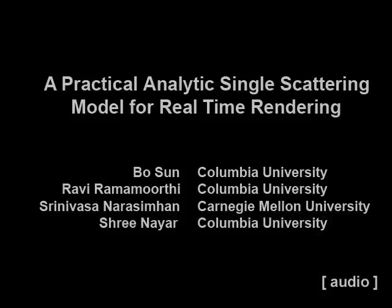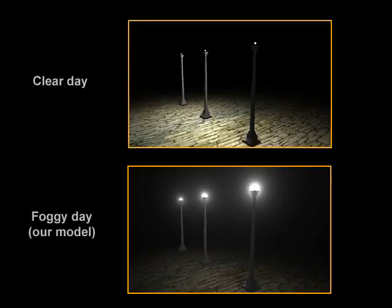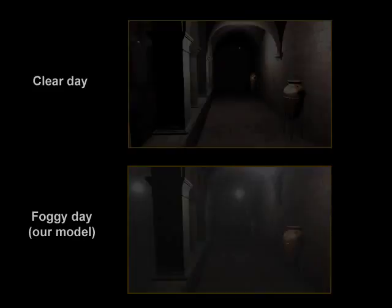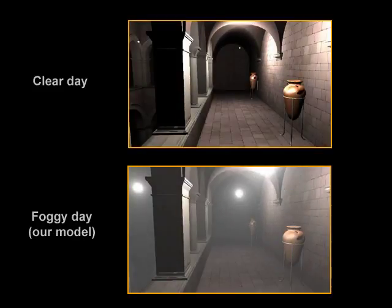In this paper we present a practical method for real-time rendering of scattering effects in participating media. Our model is based on a new explicit compact formula for single scattering from a point source. This formula can be directly implemented as a simple shader in programmable graphics hardware.